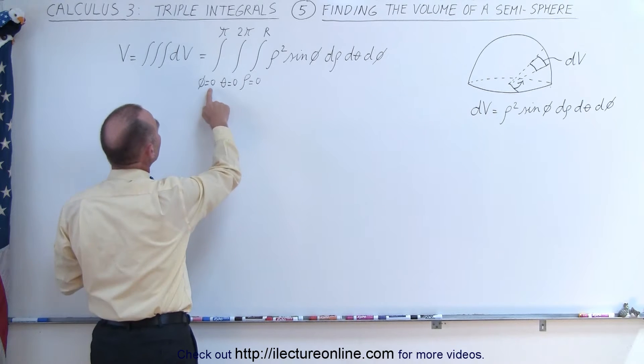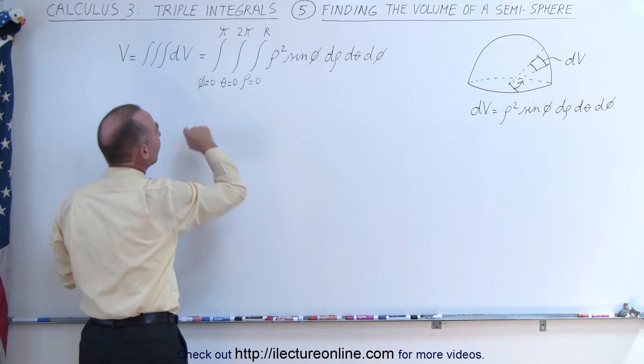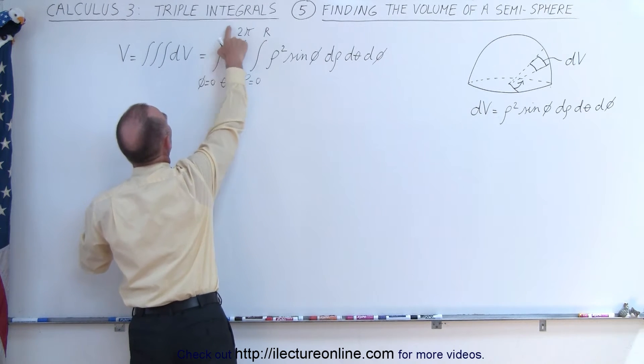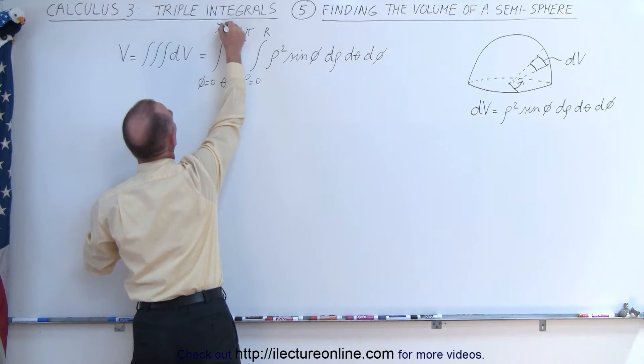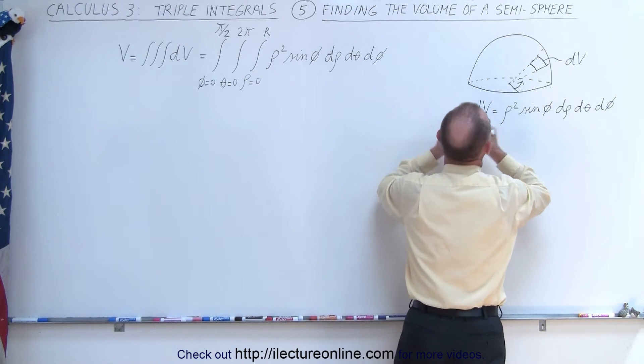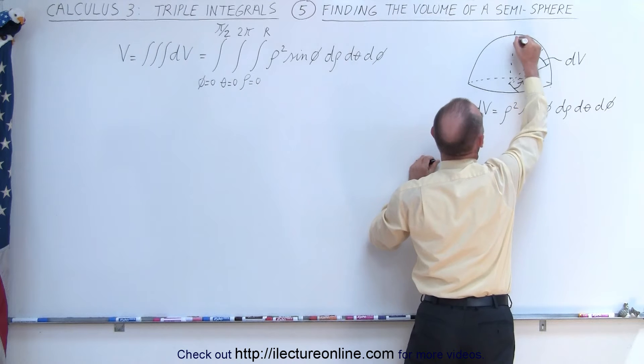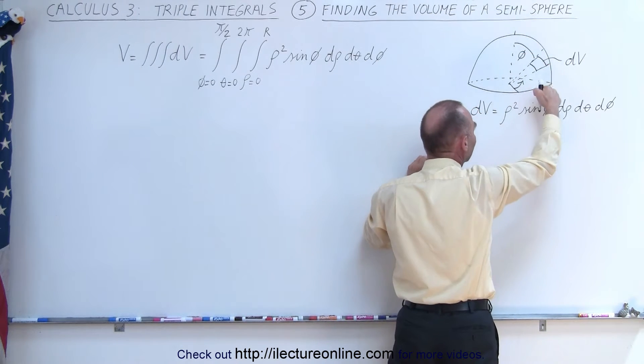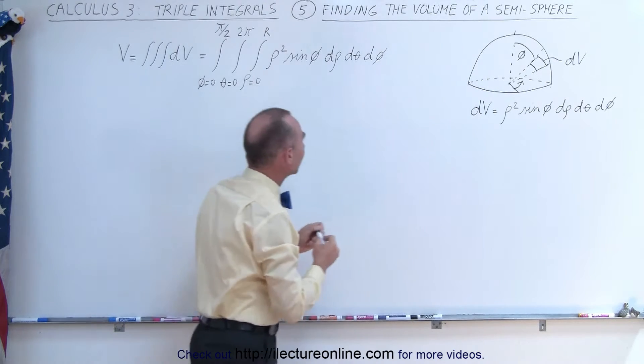And then for the angle phi, it's going to be not 180 degrees, but only 90 degrees, because we're doing a semi-sphere, not a full sphere, so the angle is going to be relative to the z-axis. It'll be this angle right here, and we're going to integrate only for 90 degrees instead of 180 degrees.